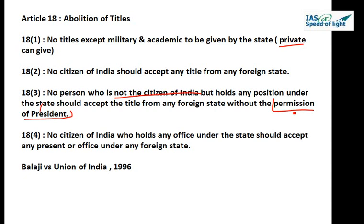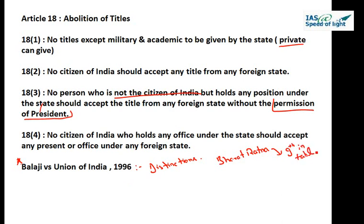This practice of conferring such titles is against the doctrine of equality before law, which is why it is included under the right to equality in fundamental rights. However, to recognize meritorious services rendered by citizens, the President of India confers civil and military awards such as Bharat Ratna, Padma Bhushan, Padma Shri, and Param Vir Chakra. These do not come under the word 'title' described in Article 18. This was decided in the landmark judgment Balaji versus Union of India, 1996.